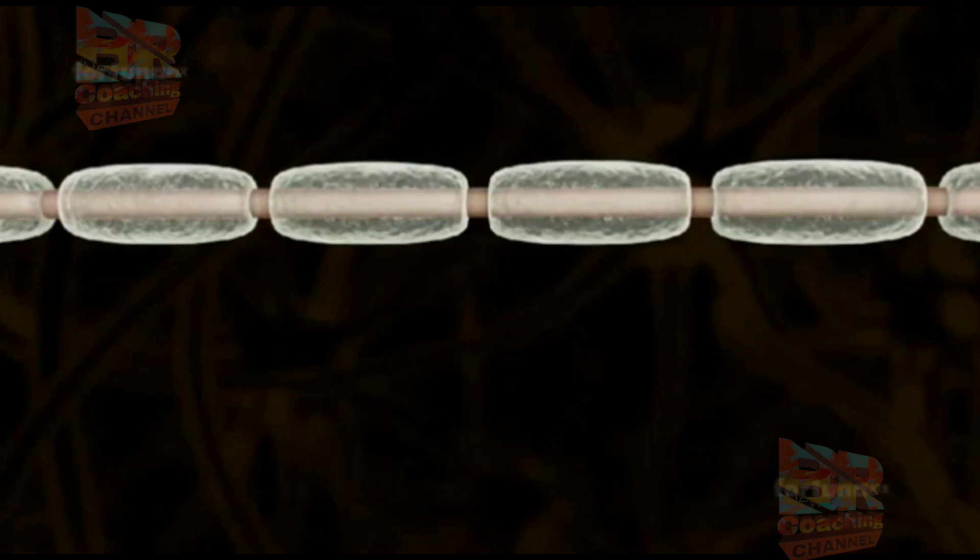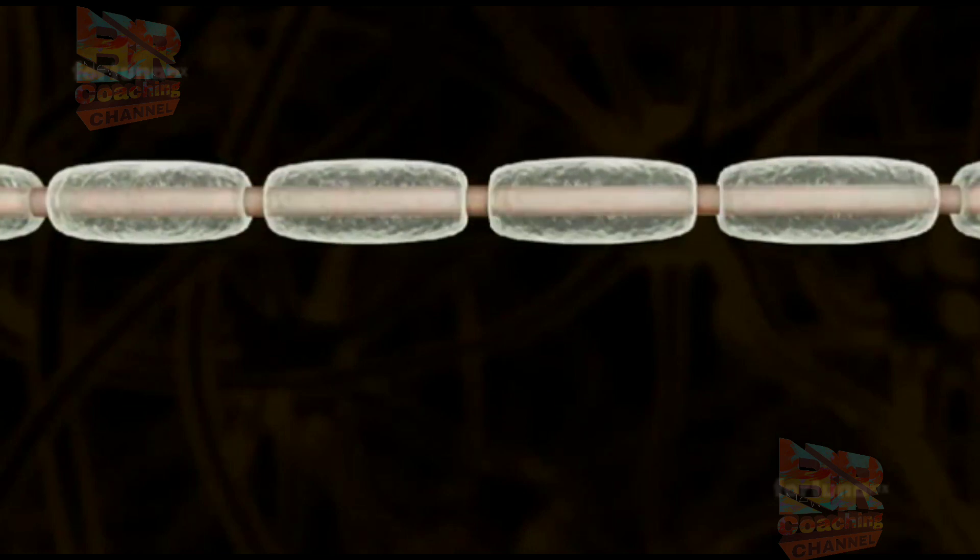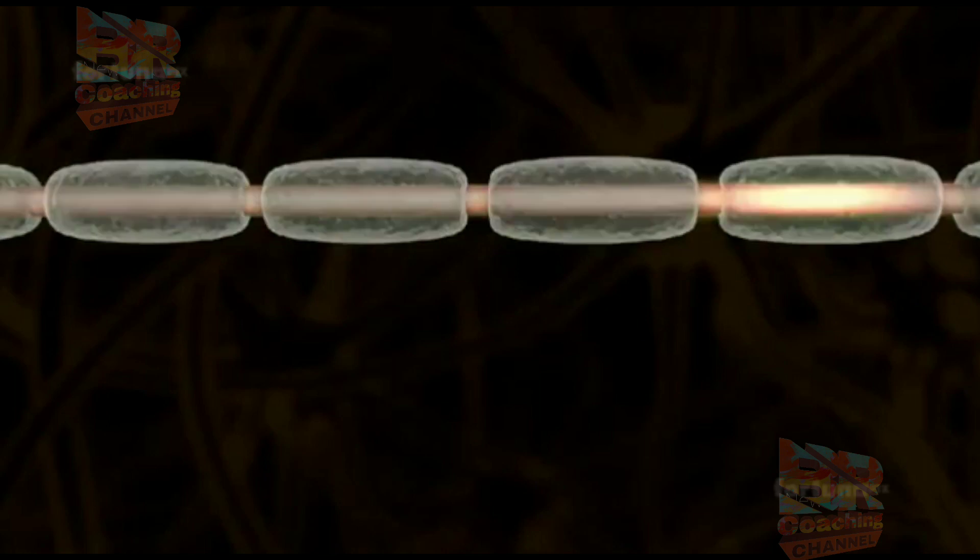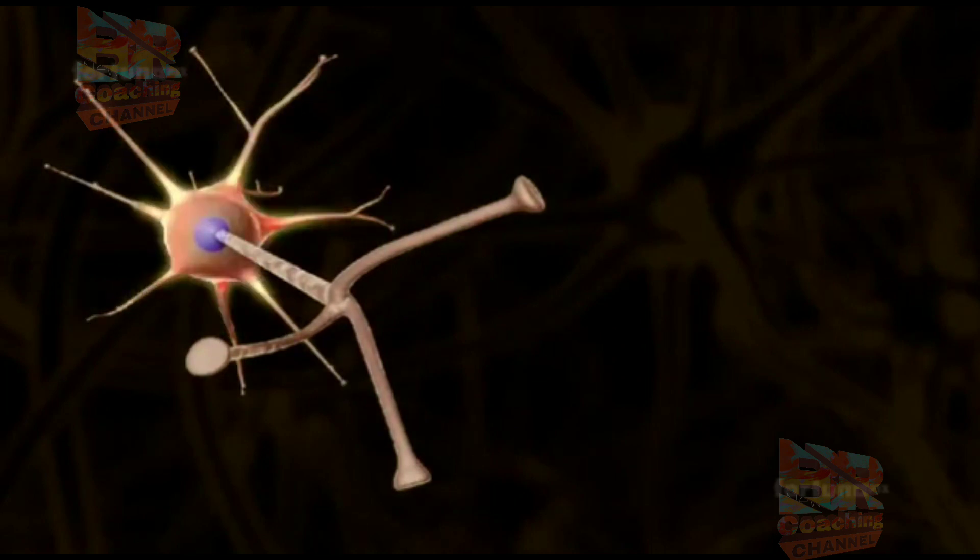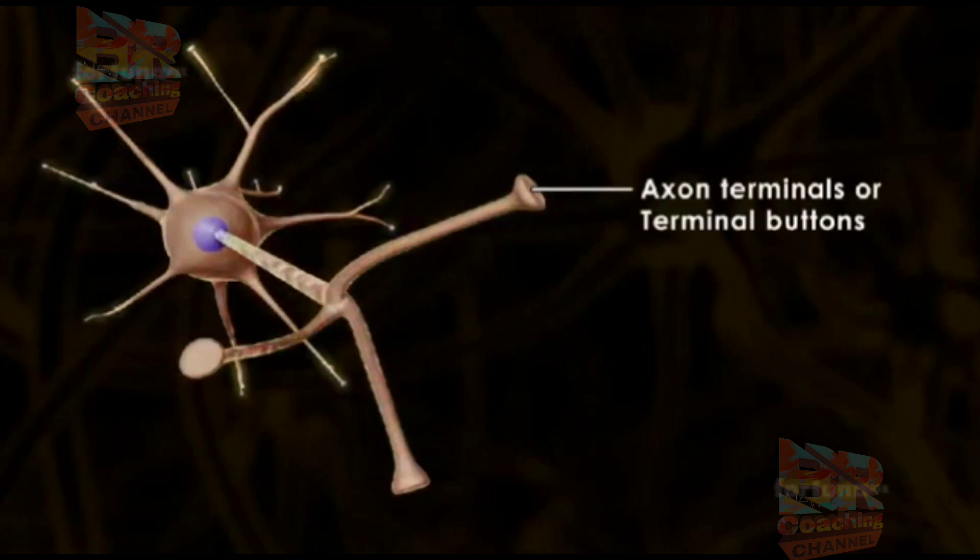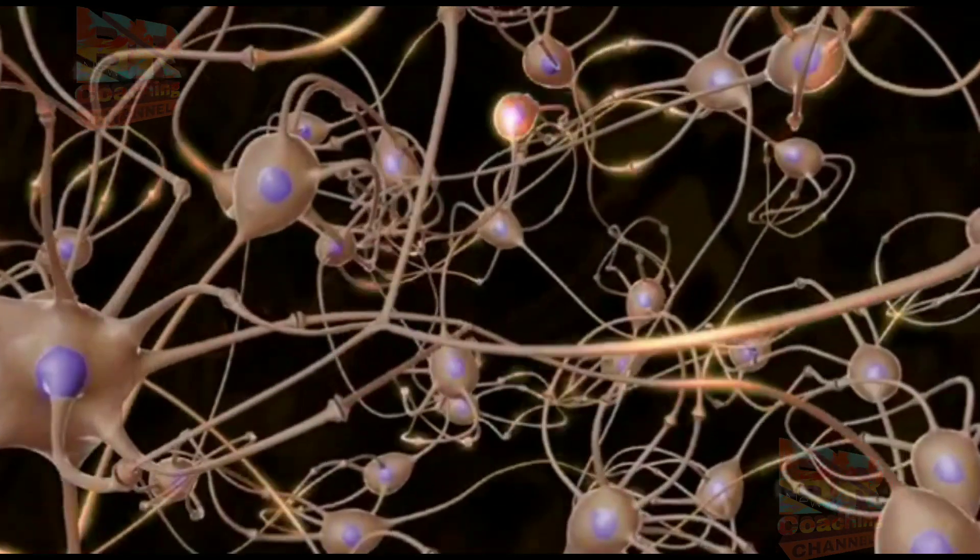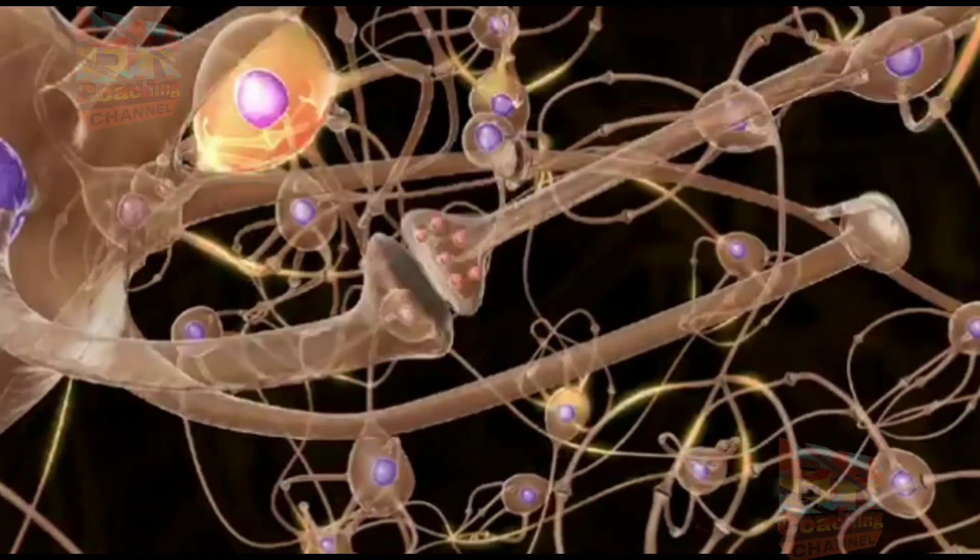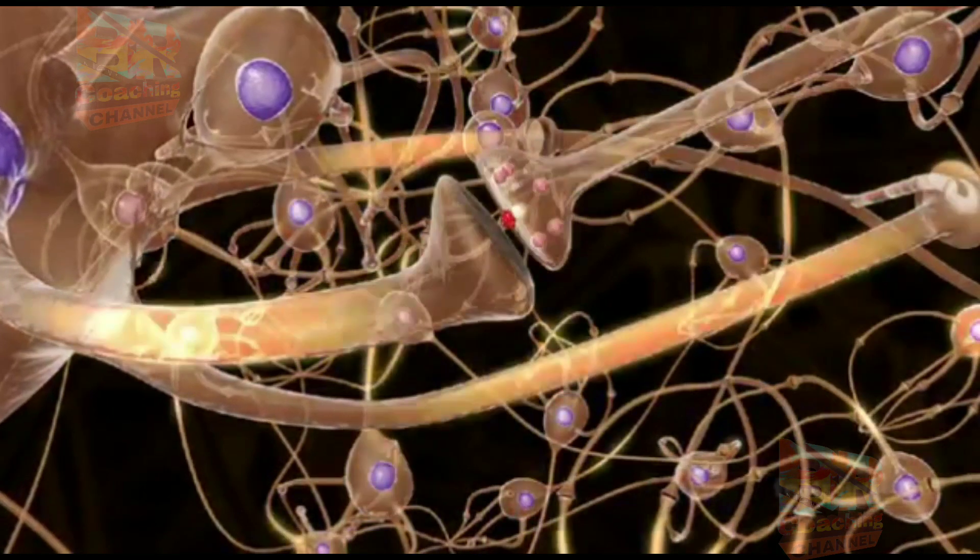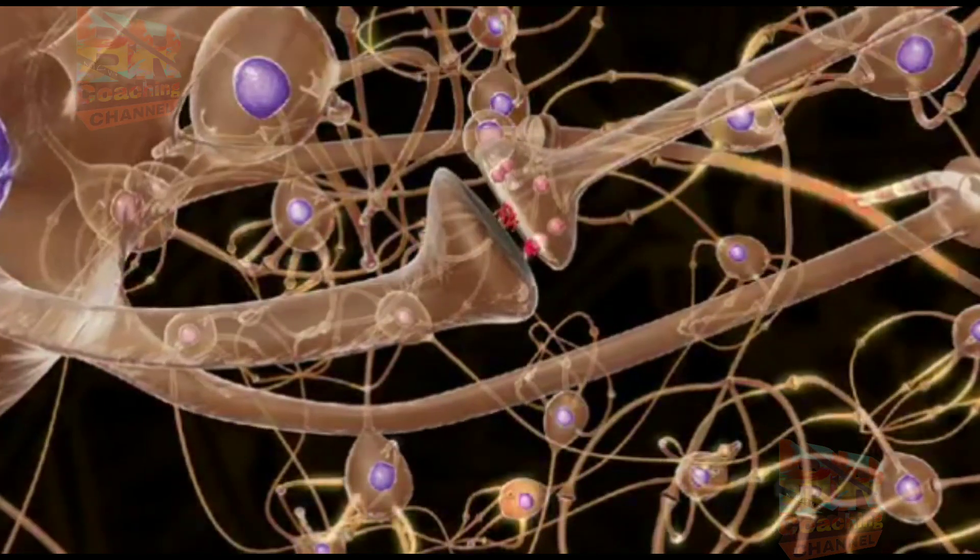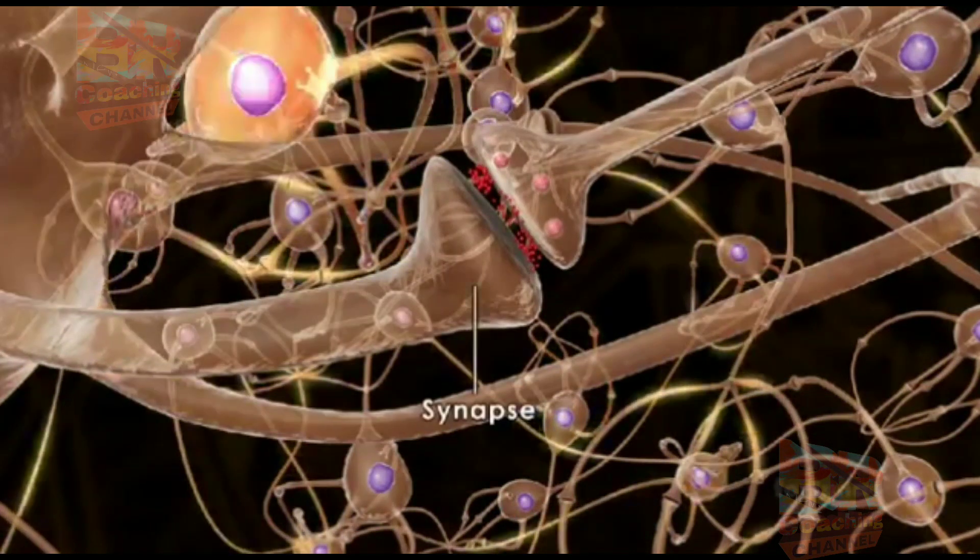Axons end in short branches with swollen tips known as axon terminals or terminal buttons. At the tip of the axon terminals are synaptic vesicles, which help to transmit impulses between axon terminals and dendrites along a tiny gap known as the synapse.